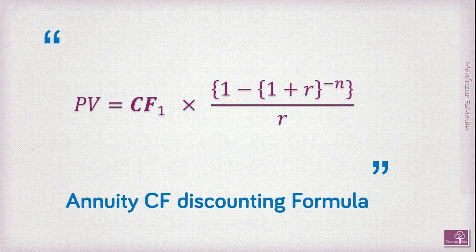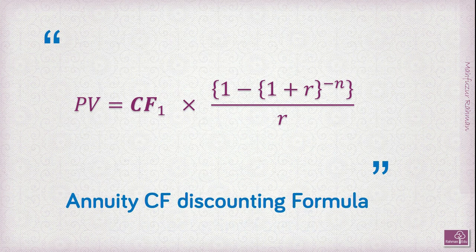Our next formula is the annuity formula, where cash flow is delivered in a fixed number of installments. Here present value equals CF1 multiplied by [1 minus (1 plus r) to the power minus n], all divided by r, where n is the number of fixed installments of cash flows.